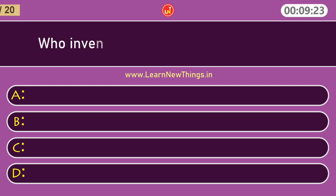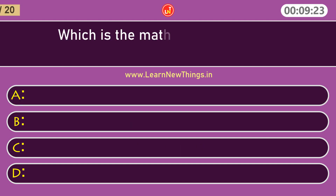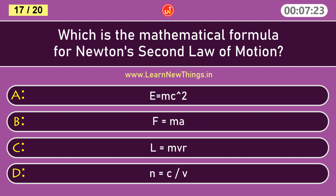Who invented the mercury thermometer? Daniel Gabriel Fahrenheit. Which is the mathematical formula for Newton's second law of motion? F equals ma.